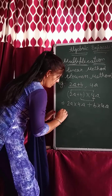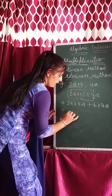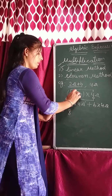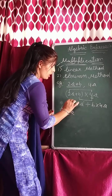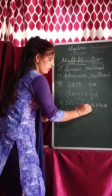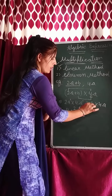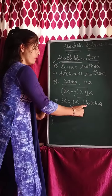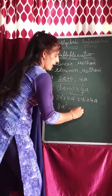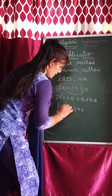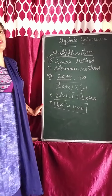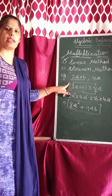Now solve this: 2 times 4 is 8. A has power 1 here and power 1 here — in multiplication, powers add up: 1 plus 1 equals 2. Then plus sign. Here 1B — 1 times 4 is 4, A as it is, and B as it is. So the answer is 8A² + 4AB. This was the linear method — how to multiply using it.